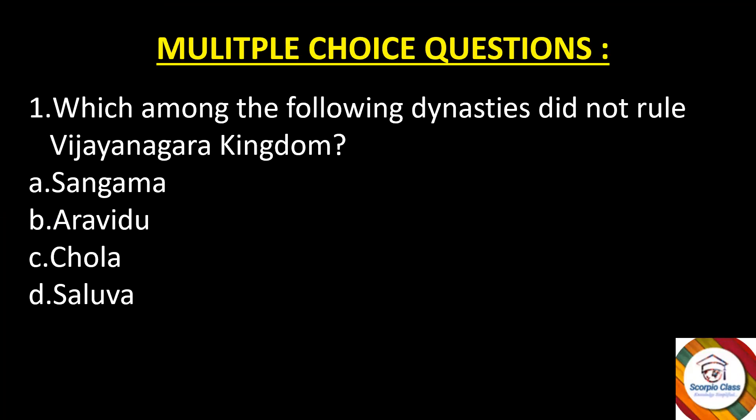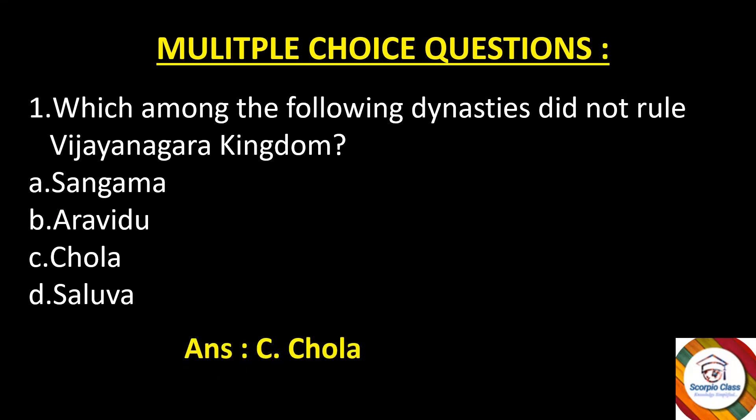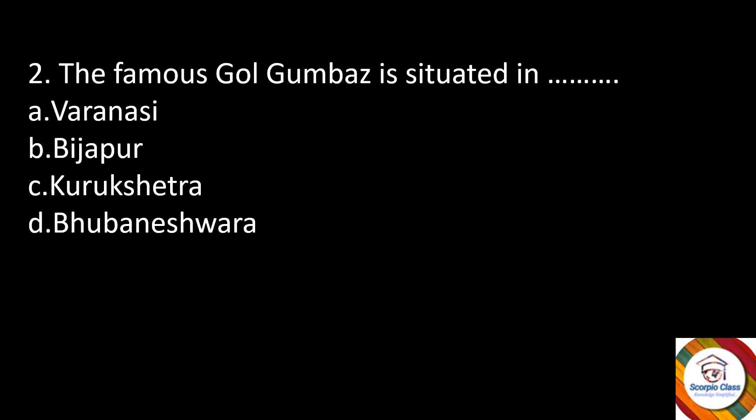First question: which among the following dynasties did not rule the Vijayanagara Kingdom? Options are Sangama, Arabidu, Chola, or Salua. The right answer is option C — Chola. The Chola dynasty did not rule the Vijayanagara Kingdom. We'll be playing like a quiz, and it'll also serve as a revision since the answers are provided.